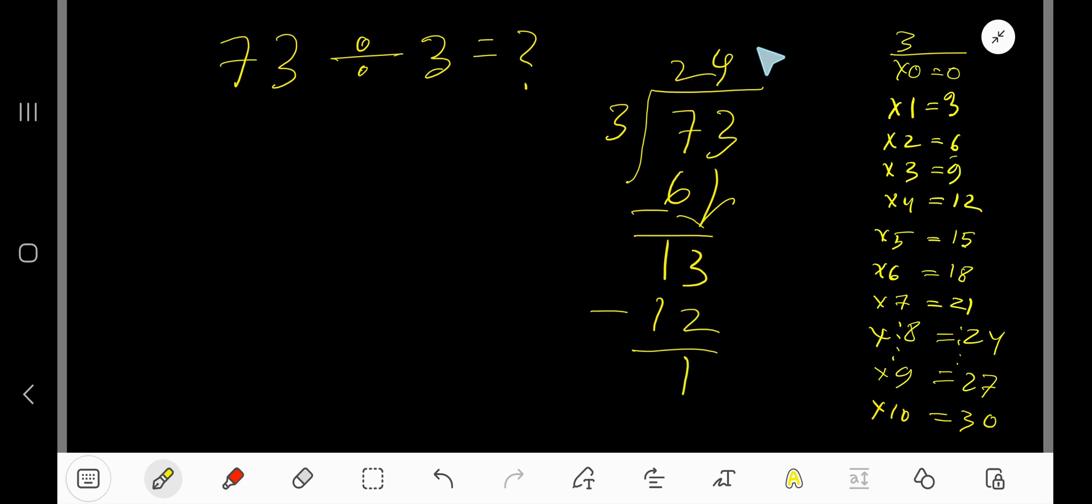So our answer will be 24 remainder 1. If I want to write my answer in decimal form, then take your decimal, add number of zeros, bring down the first zero. Before this zero there is a decimal. Decimal must come to the quotient directly. 3 goes into 10 how many times?